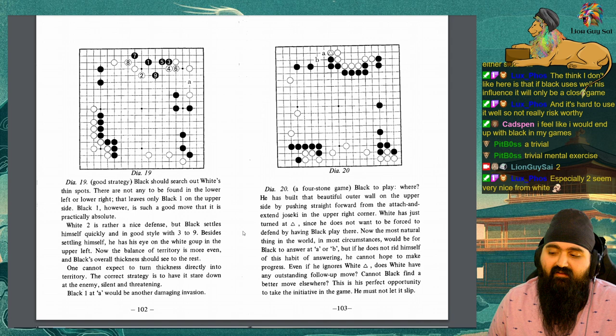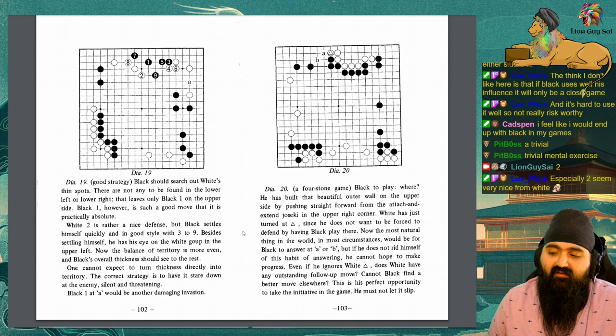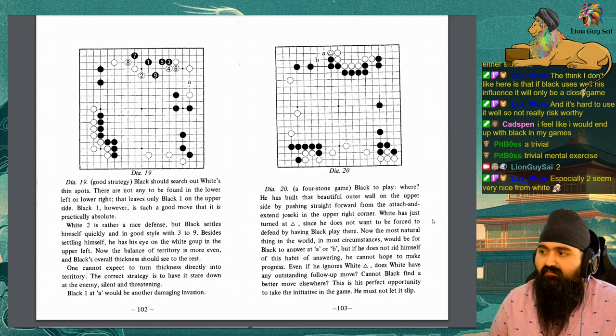One cannot expect to turn thickness directly into territory. The correct strategy is to have it stare down at the enemy, silent and threatening. Black 1 at A would be another damaging invasion.